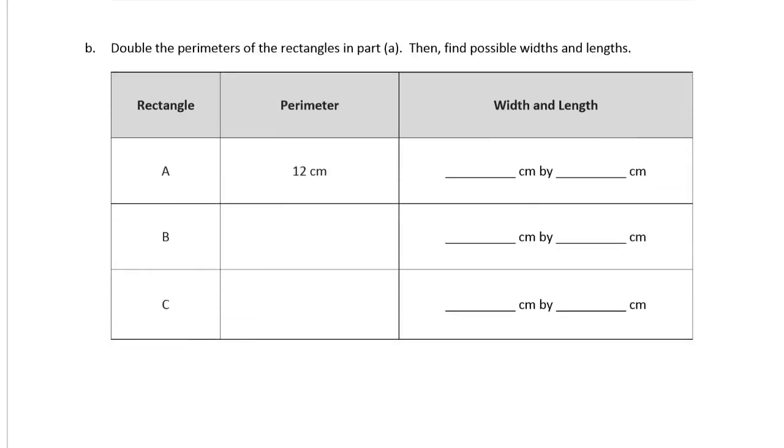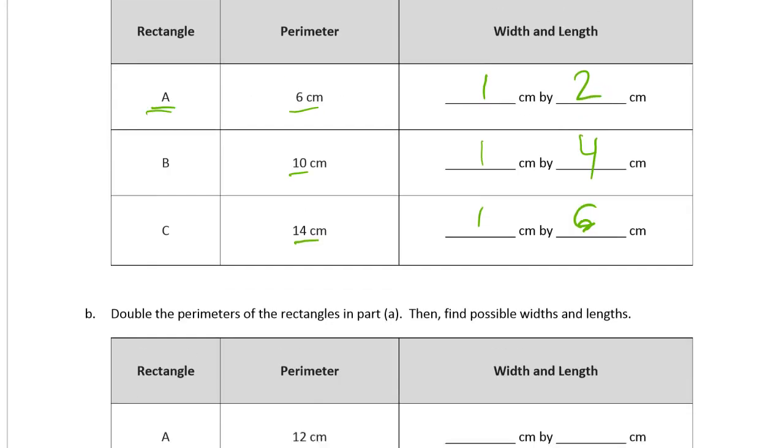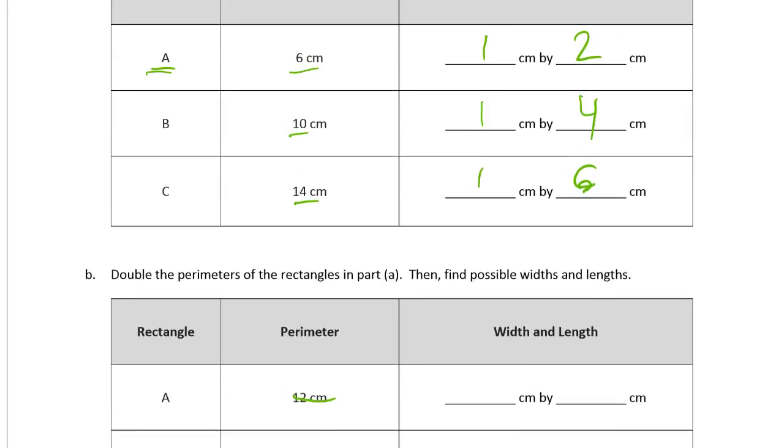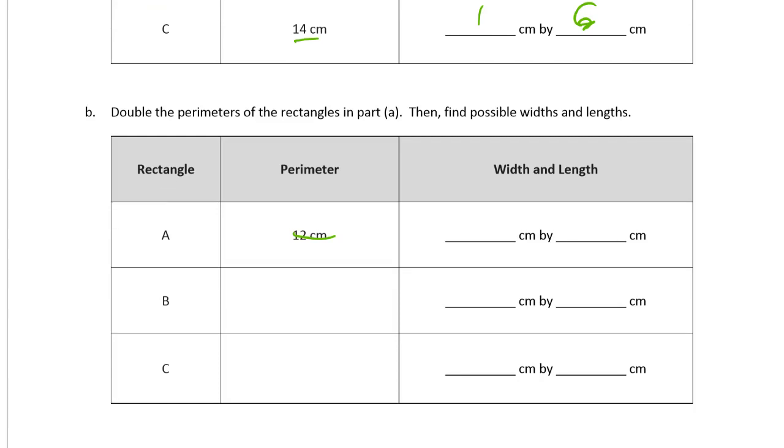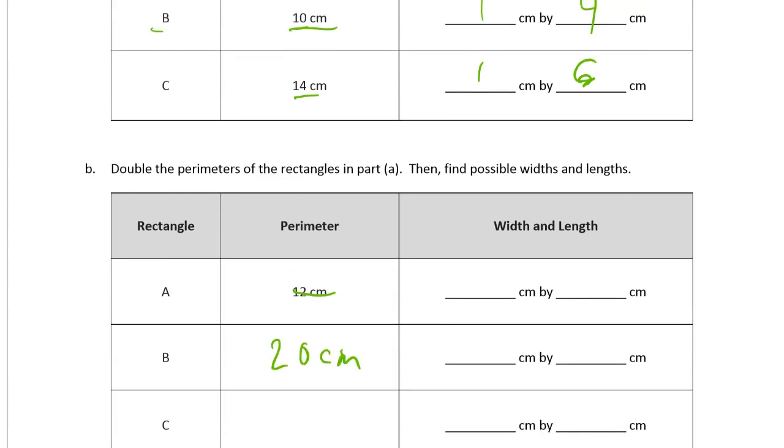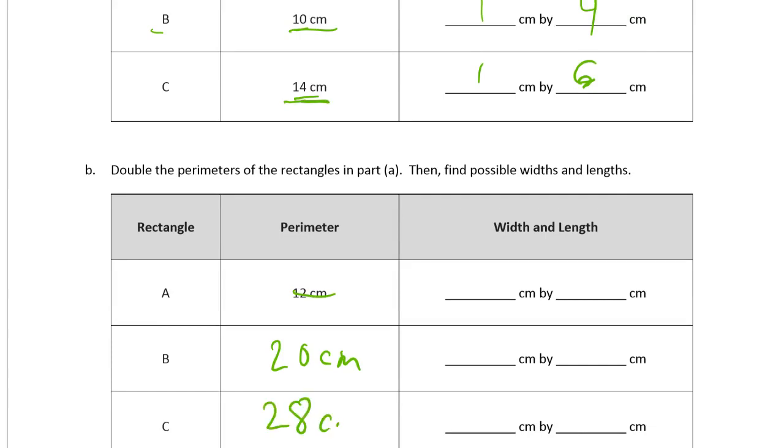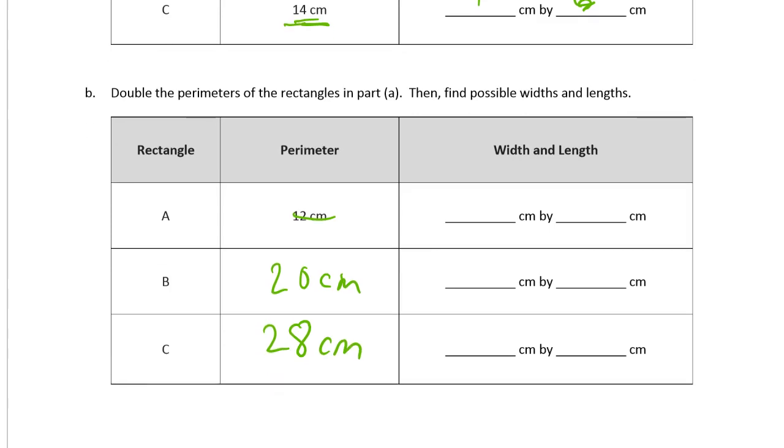Now double the perimeters of rectangles in part A and find the possible widths and side lengths. That first one for A was six, and now it's twelve. For B, we're going to double that one. For ten, double ten is twenty. And then for C, we're going to double fourteen, and that's twenty-eight. So now we're looking for widths and lengths, we want numbers that add up to half of these perimeters. So half of twelve is six, so any two numbers that add up to six will be fine. How about two and four? And there's a lot of other answers that will work. Just whatever, that's just the one that I picked. You don't have to have the same ones as me, as long as they add up to six.